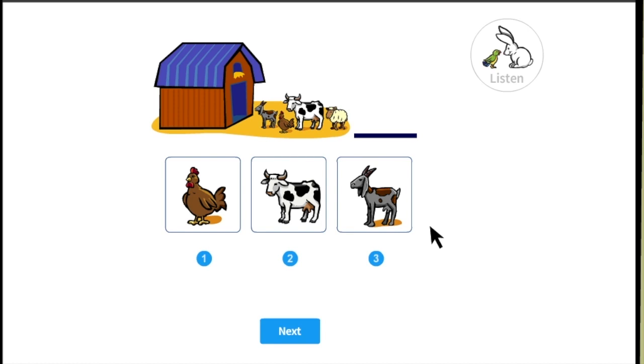Pick the picture of the animal that is second in line. Second in line. I think I need to listen to the instructions again. Click the listen button with the mouse.